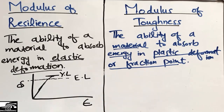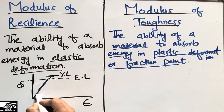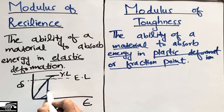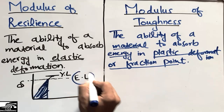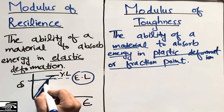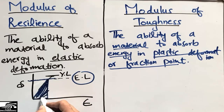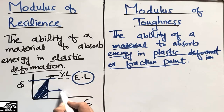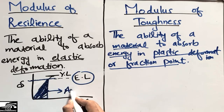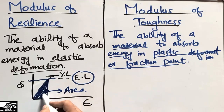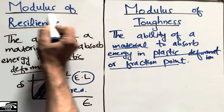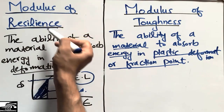The modulus of resilience is defined as the energy stored in a material up to the elastic limit when the material is being deformed. Up to this point, the energy stored in the material — represented by the area of the triangle on the graph — is what we call the modulus of resilience.